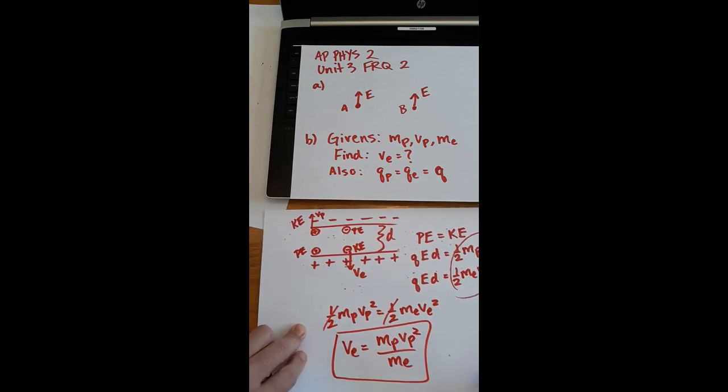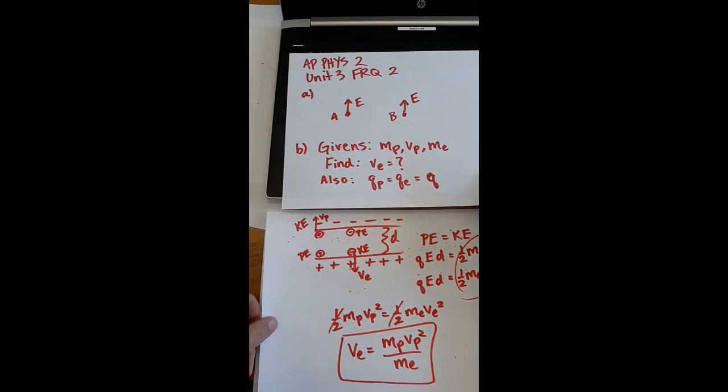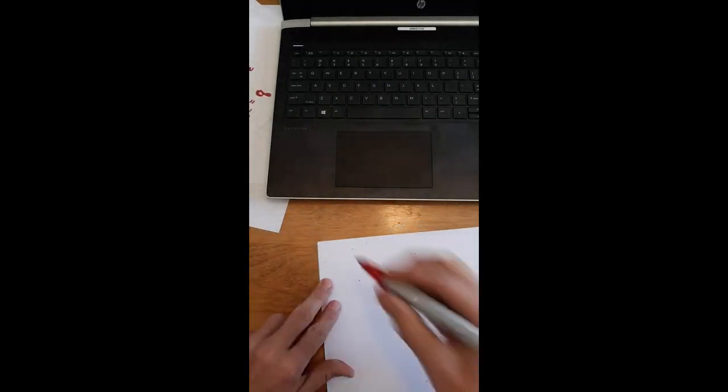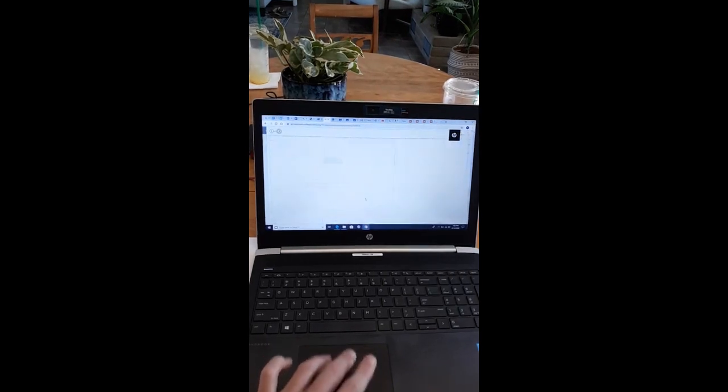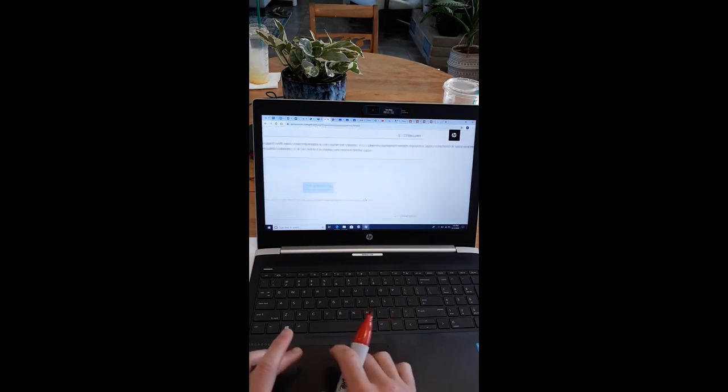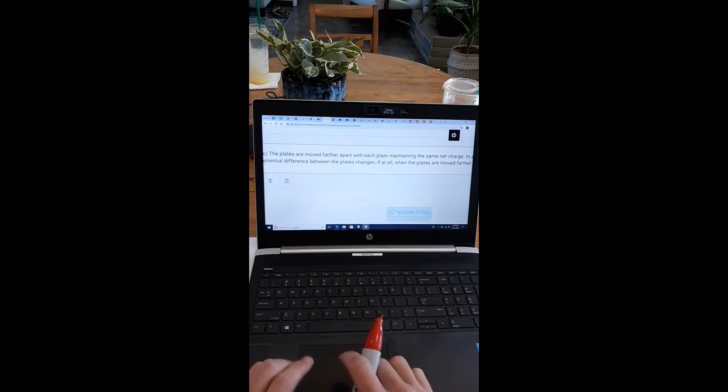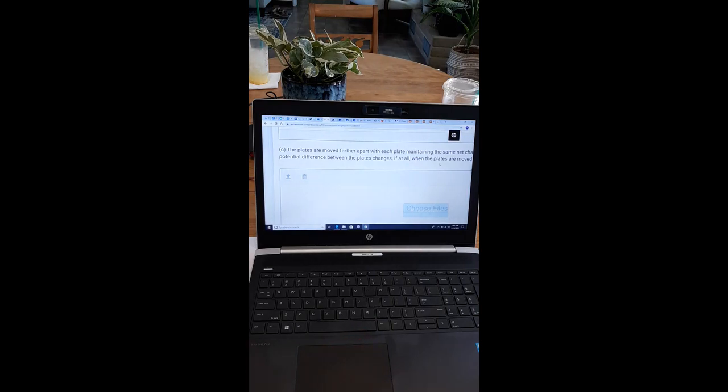This is a pretty quick one. Part C is difficult only in concept, I suppose, but not necessarily long either. So let's get to part C. Let's do some arguing or some reasoning. It says the plates are moved farther apart with each plate maintaining the same net charge. Let me zero in here so you can see what I'm reading. Same net charge. In a coherent paragraph length response, apply concepts of work and energy to explain how the electric potential difference between the plates changes, if at all, when the plates are moved further apart.